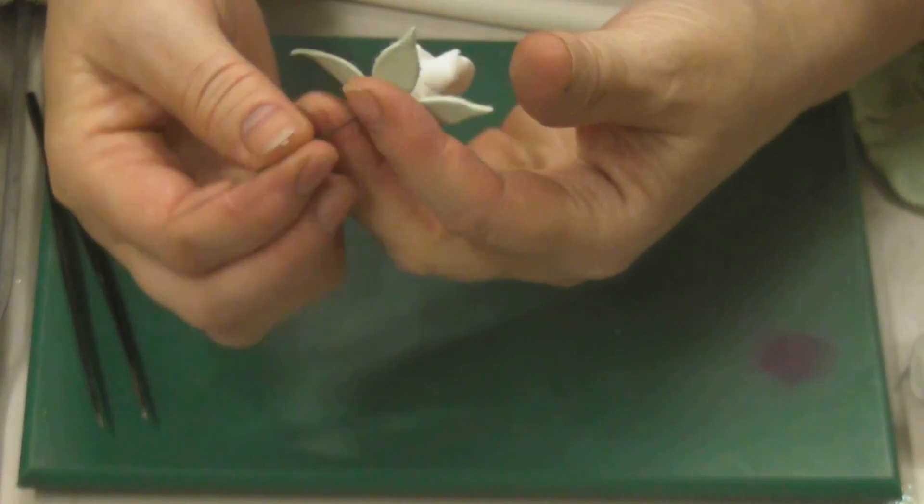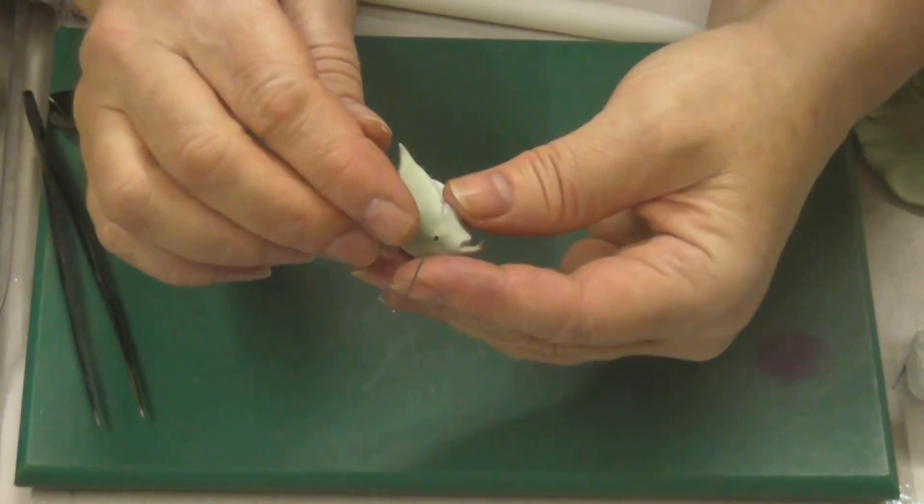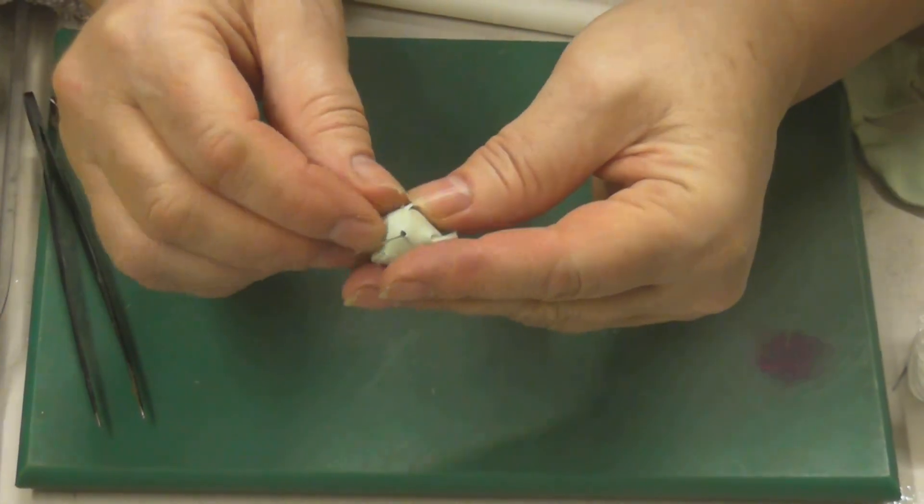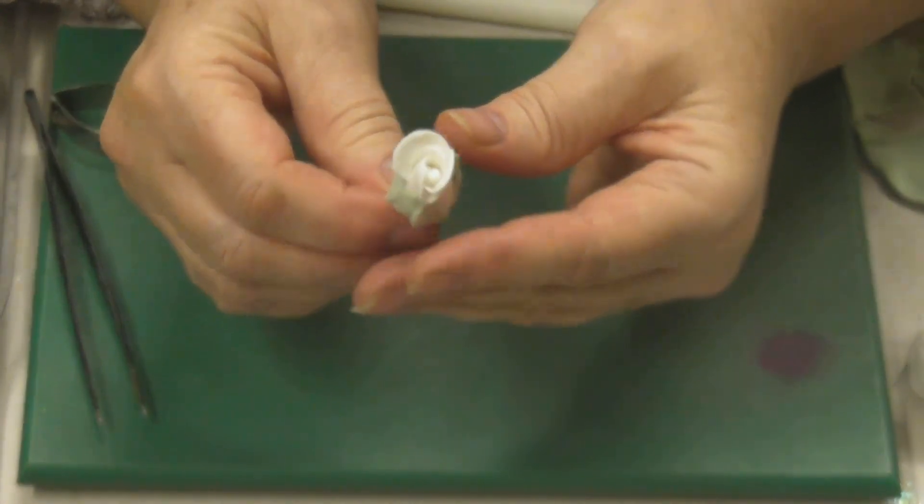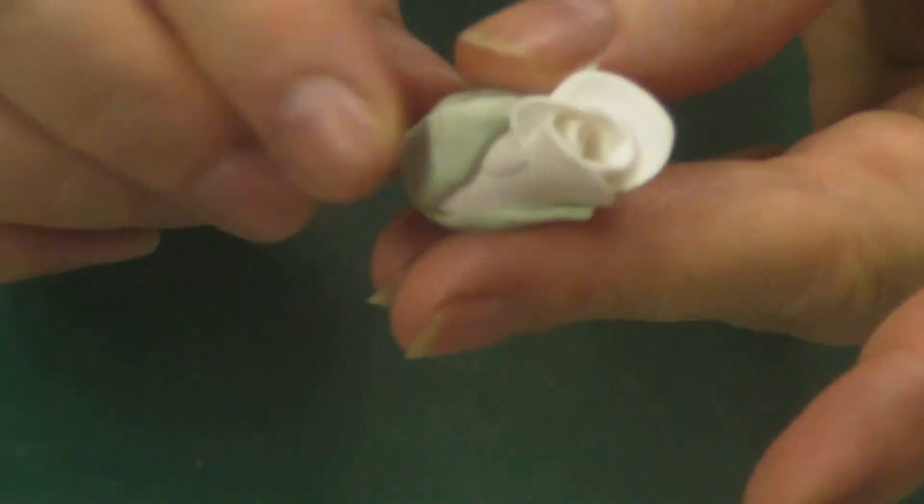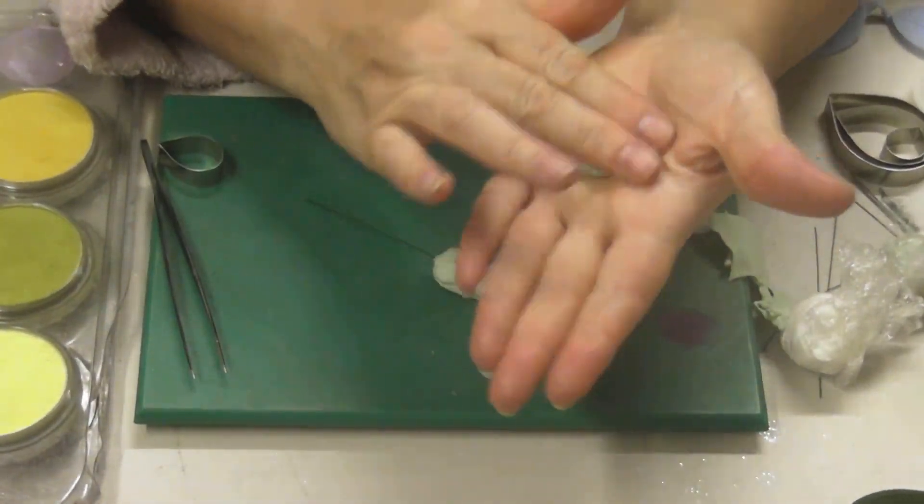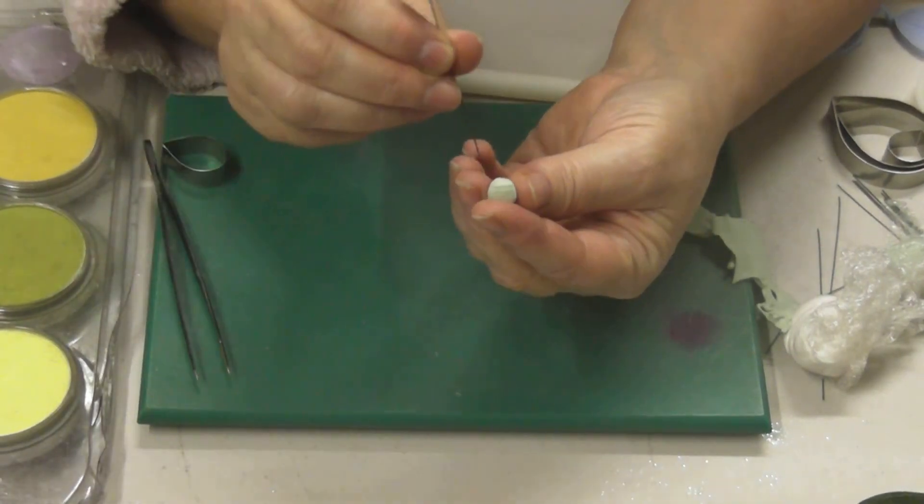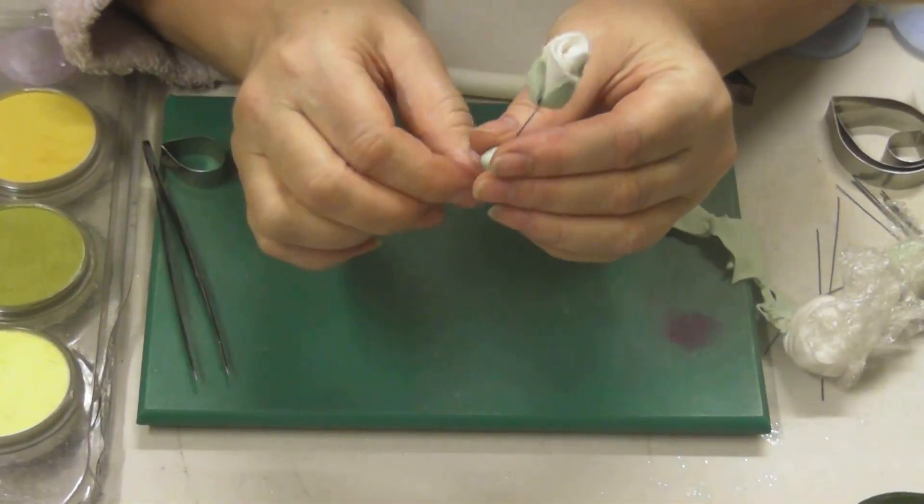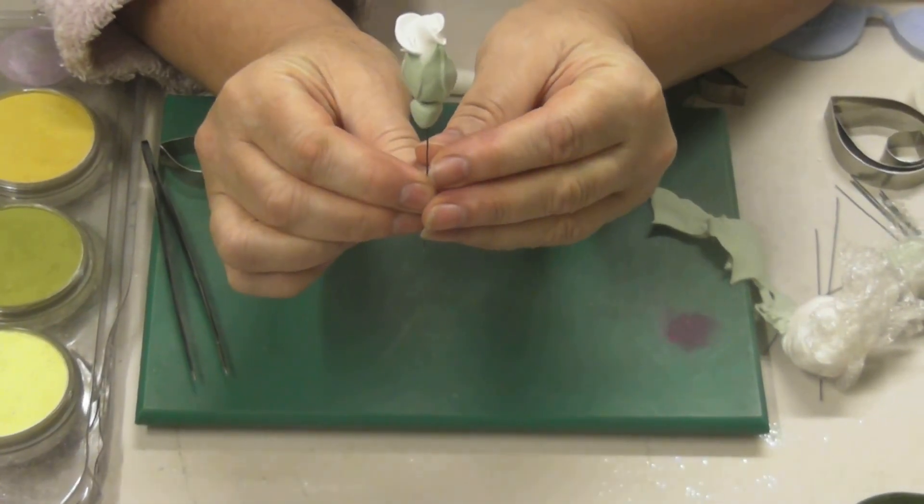Pop that into the center of the calyx and push it down. You are better off leaving your bud to dry before you do this, but let's just pretend I've done that. Cut that around your flower and that gives it a nice finish. Take a little bit more green paste, roll it into a ball, and we're going to put that on the wire, push it up to the top, and that finishes off your little rosebud.